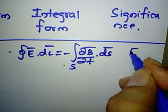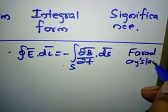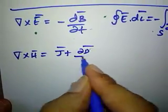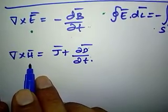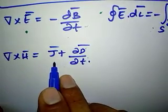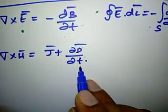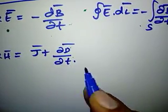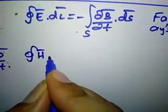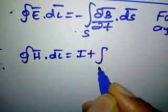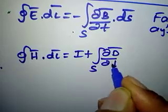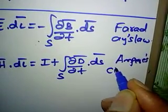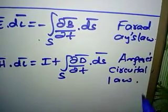The second Maxwell's equation: curl of H-bar = J-bar + ∂D-bar/∂t. The curl of magnetic field intensity equals the current density plus ∂D-bar/∂t, where ∂D-bar/∂t is the displacement current density. In integral form: closed integral of H-bar · dL-bar = I + surface integral of ∂D-bar/∂t · ds-bar. This equation comes starting from Ampere's circular law.